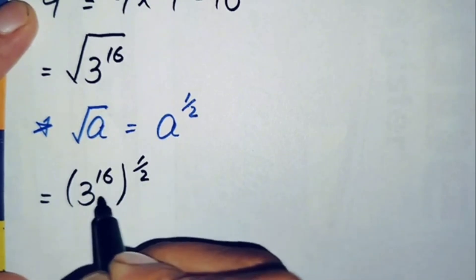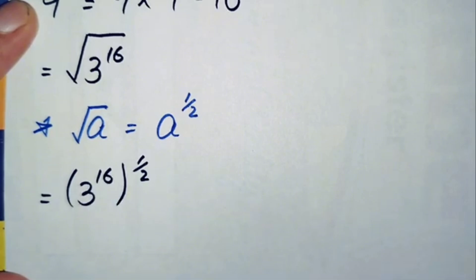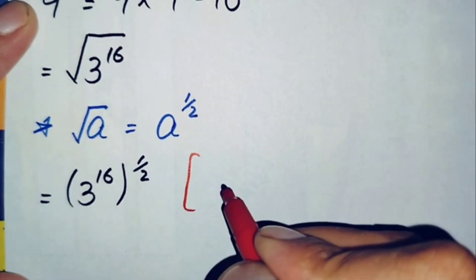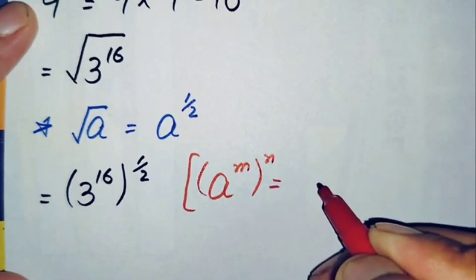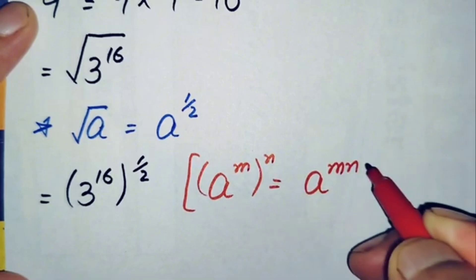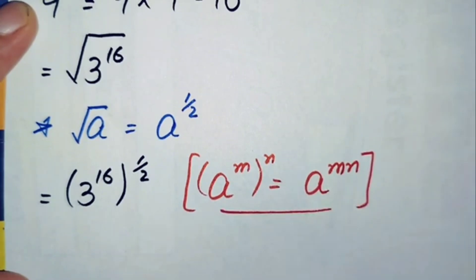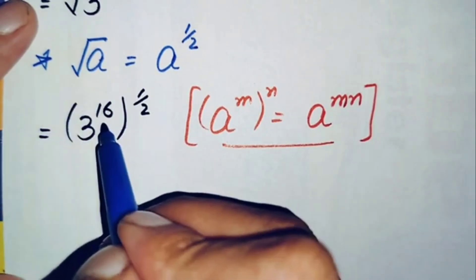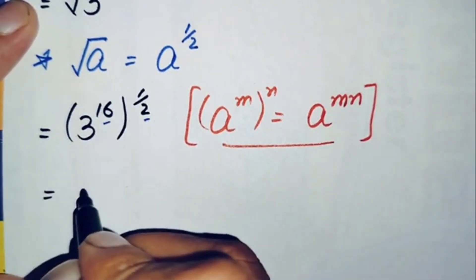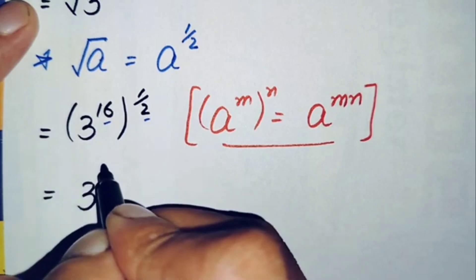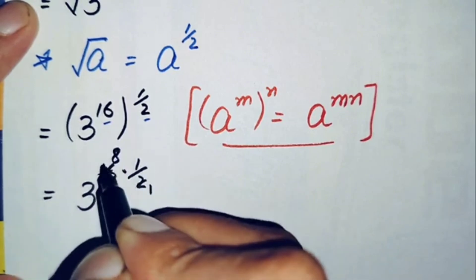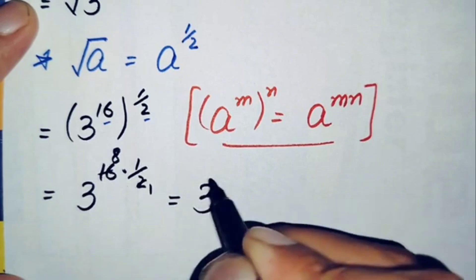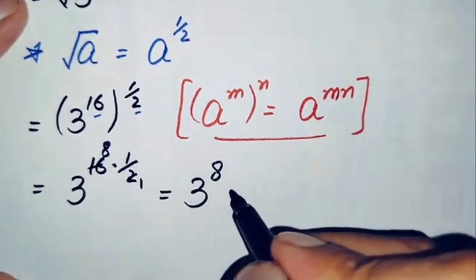Now we apply the exponential property: a raised to power m, raised to power n, equals a raised to power m times n. We multiply the two exponents: 16 times 1 over 2 equals 8. So this simplifies to 3 raised to power 8.